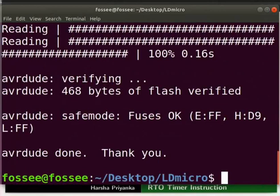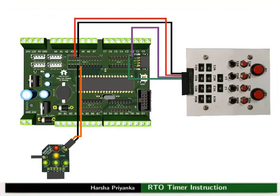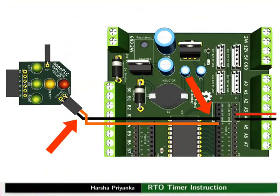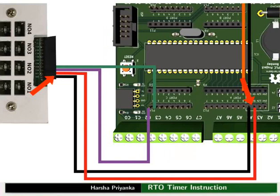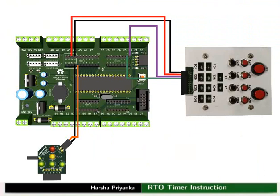This will prevent any hardware damage. Let us see the connection details now. Connect the ground pin of the red LED of the traffic light module to ground of the mainboard. Then connect the plus 5V pin of the red LED to PA0 pin of the mainboard. Connect ground and 5V of switchboard to ground and 5V of the mainboard respectively. Connect NO1 to PC0 of the mainboard. Then connect NO2 to PC1 of the mainboard. Make the connections as shown in the picture.